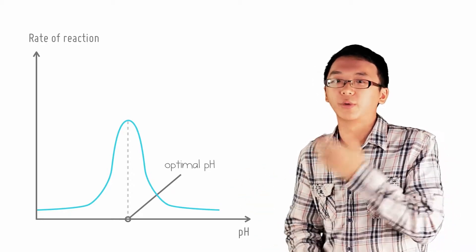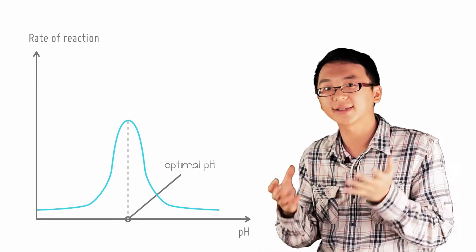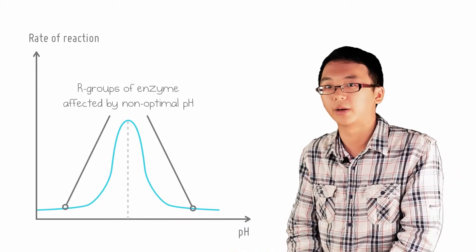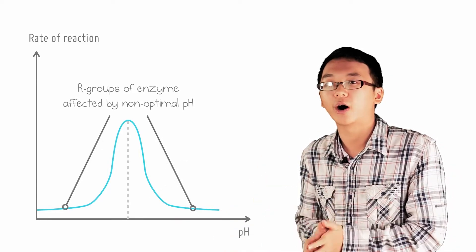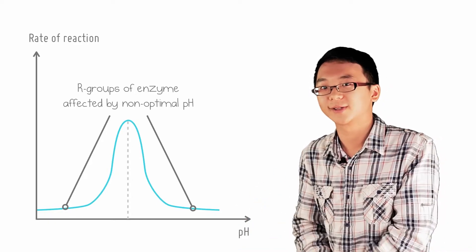As the pH moves away from the optimal pH, the rate of reaction falls because the excess H+ ions from the acidic environment or OH- ions from the alkaline environment will affect the charge or ionization of the R-groups or its residues at the active site.